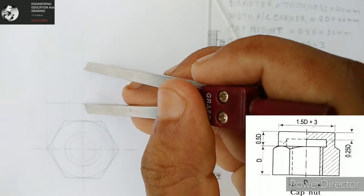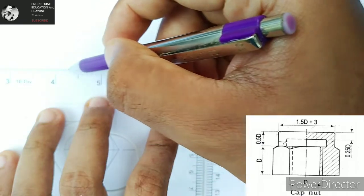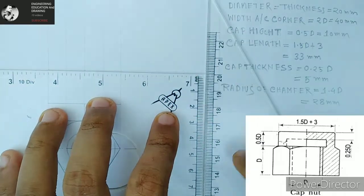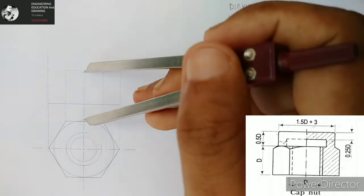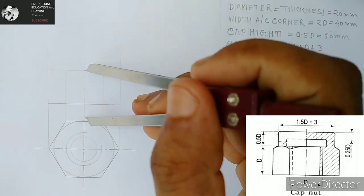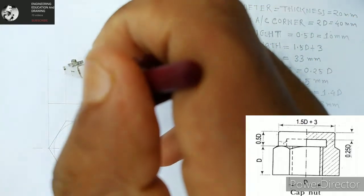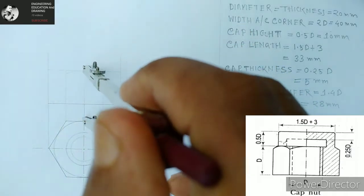The height will be, as we have mentioned, 20 millimeters. So taking 20 millimeters we draw this line. Now the radius of chamfer is 1.4D, which is 28 millimeters.